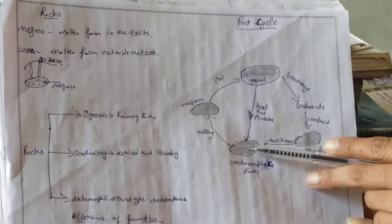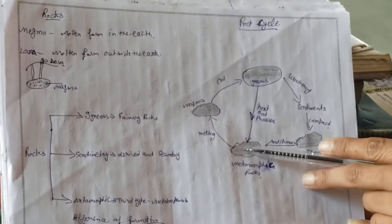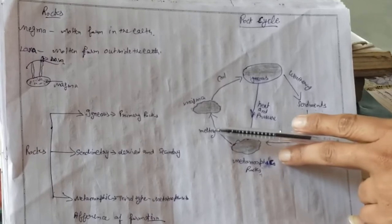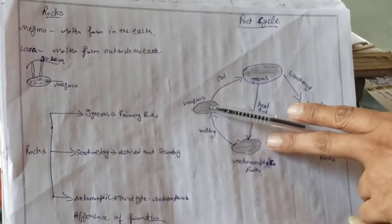The metamorphic rock can transform again. All the particles will melt and convert back to magma.